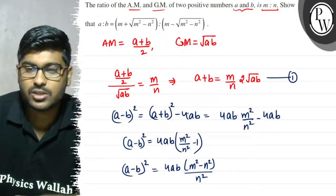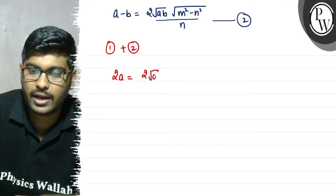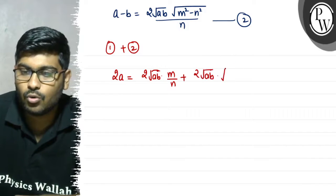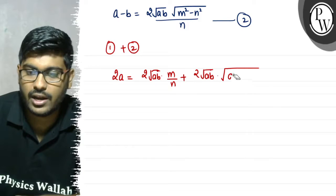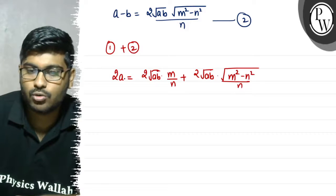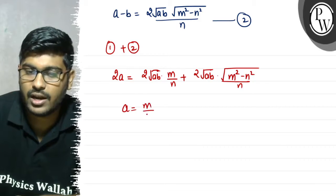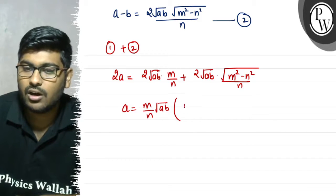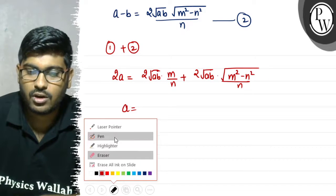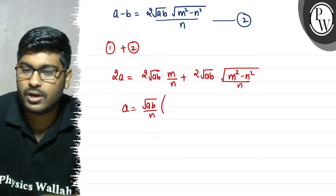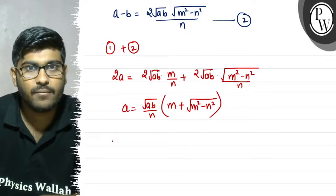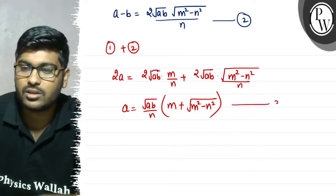So how much do we have to write? 2m over n into root(ab), plus 2 root(ab) into root(m² - n²) over n. So dividing both sides, we get 1 plus root(ab) over n. Now if we take root(ab), and root(m² - n²), let's call this equation number 3.